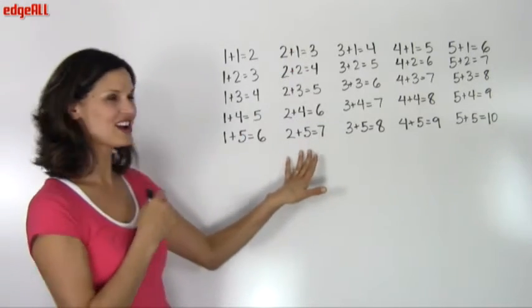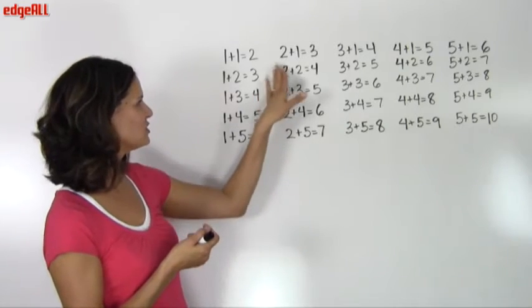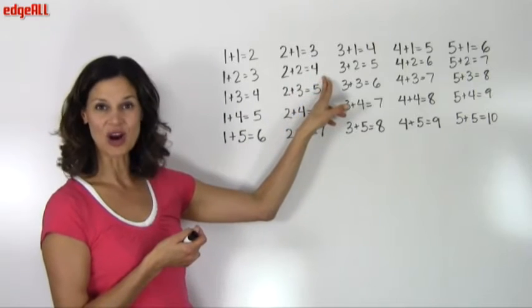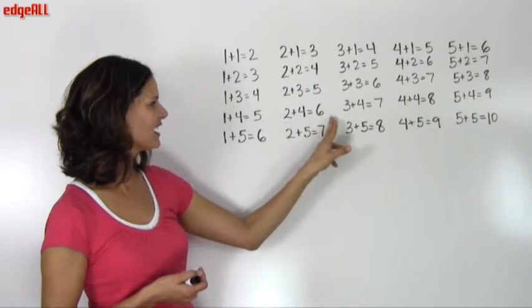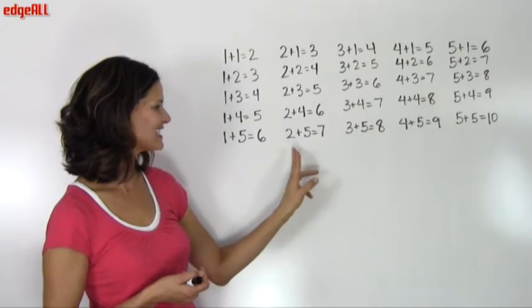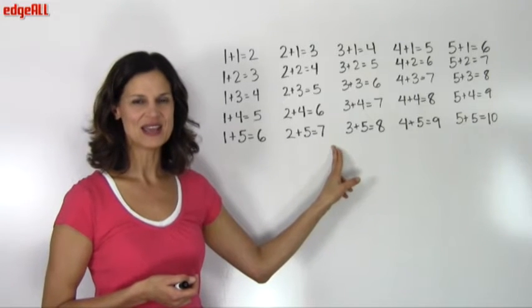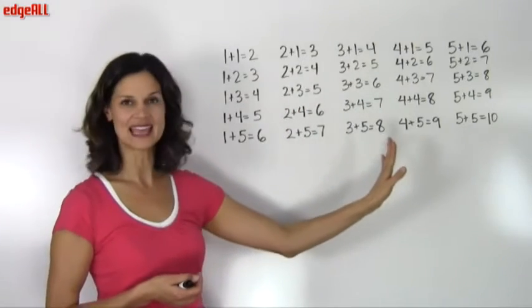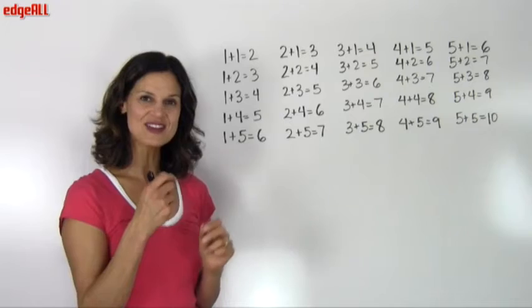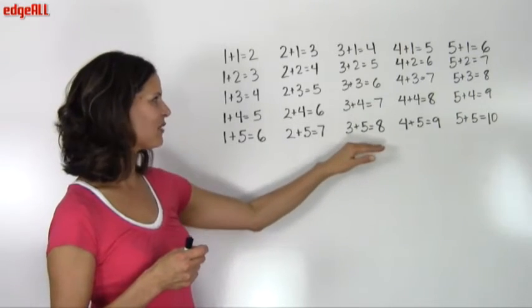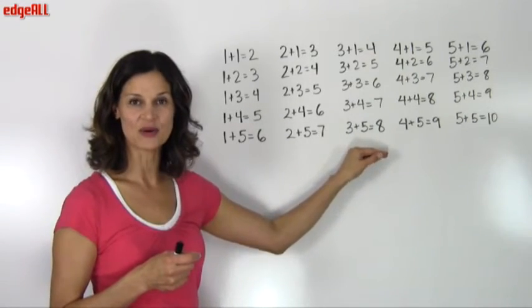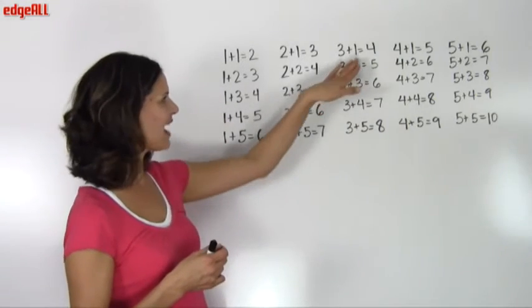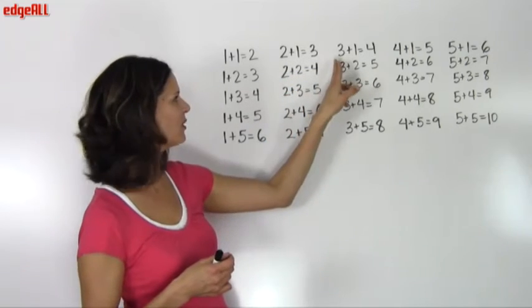This column here is our 2 plus column. 2 plus 1 equals 3, 2 plus 2 equals 4, 2 plus 3 equals 5, 2 plus 4 equals 6, and 2 plus 5 equals 7. You should practice these a lot. You could write a table like this on a piece of paper, and even just writing these numbers and writing these addition facts down will help you to memorize them. And then you can say them out loud like we are here, and that will also help you memorize.